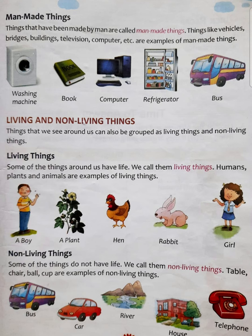The next subheading is non-living things. Woh cheezein jinme jaan nahi hoti. Some of the things do not have life — kuch cheezein mein jaan nahi hoti. We call them non-living things. Table, chair, ball, cup are examples of non-living things. Bus, car, river, house, telephone — all these are also examples of non-living things kyunki in sab mein jaan nahi hoti.